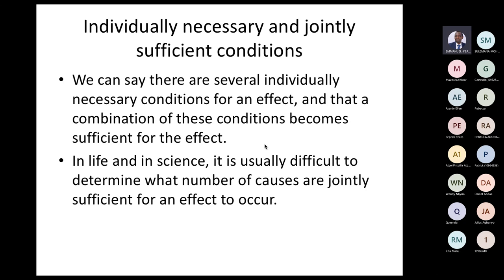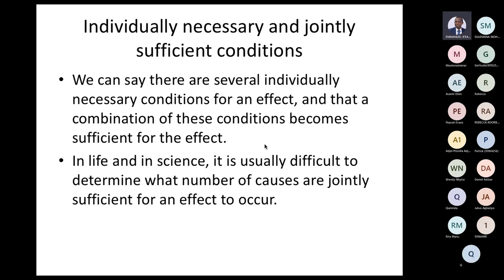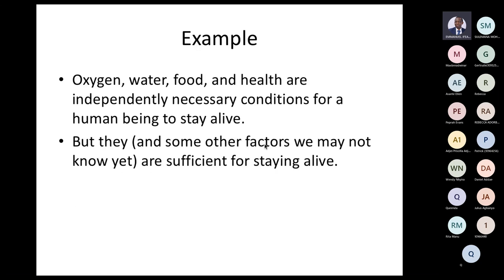In life and in science, it's usually difficult to determine what number of causes are jointly sufficient for an effect to occur. For example, oxygen, water, food, and health are independently necessary conditions for a human being to stay alive, but they, along with some other factors we may not know yet, are jointly sufficient for staying alive.